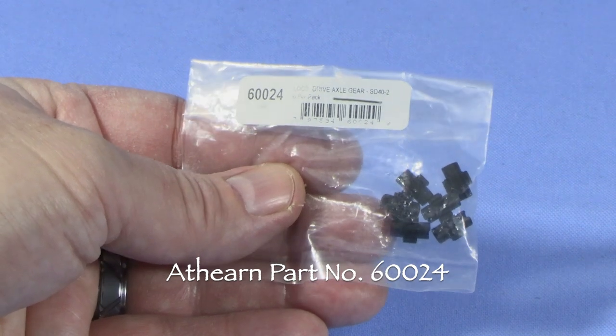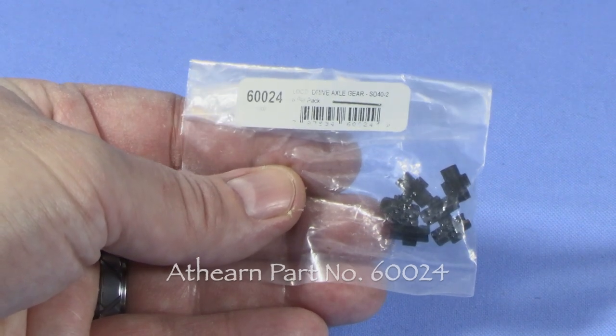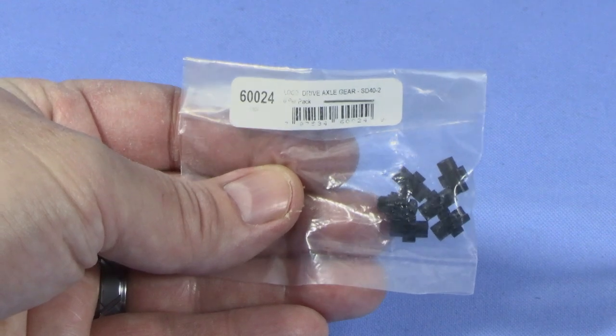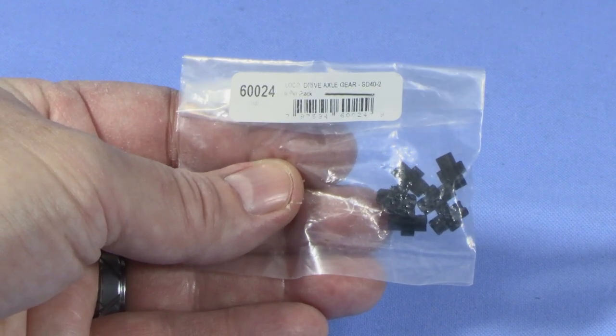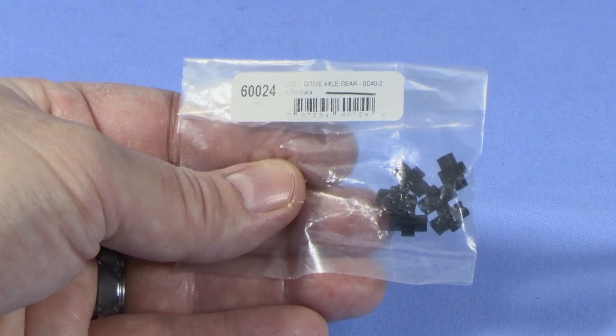This is Athern part 60024, loco axle drive gears. It says it's for an SD40-2, but these are the correct parts for many Athern models as well as Proto 2000 diesels that have this truck design.